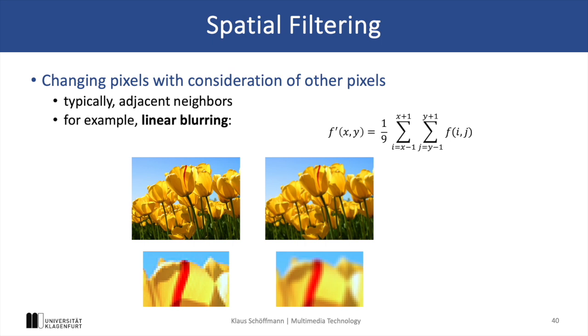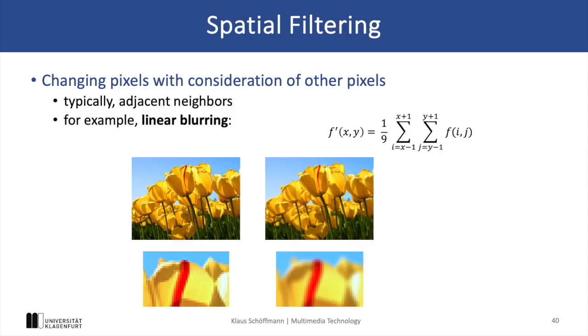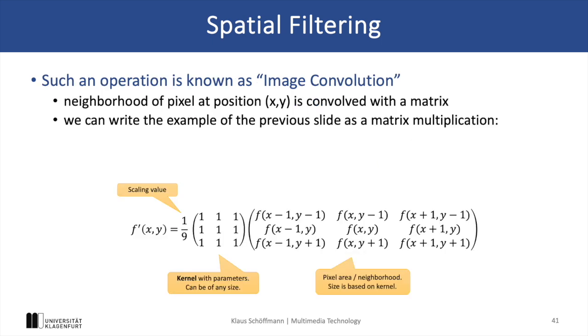Spatial filtering adjusts pixel values based on their neighborhood, often using a convolution with a kernel matrix. An example is a linear blur, which is a simple average of the surrounding pixels, resulting in a smoother image. It is important to understand that we compute one single result pixel in each step, based on average pixel values in an input neighborhood — in this example, a neighborhood of 3×3 pixels with the result pixel in the middle. Another way to express such an operation is with a kernel that includes factors for all pixels in the input neighborhood, multiplied with the pixel values in the neighborhood, as well as a scaling value for the resulting sum.